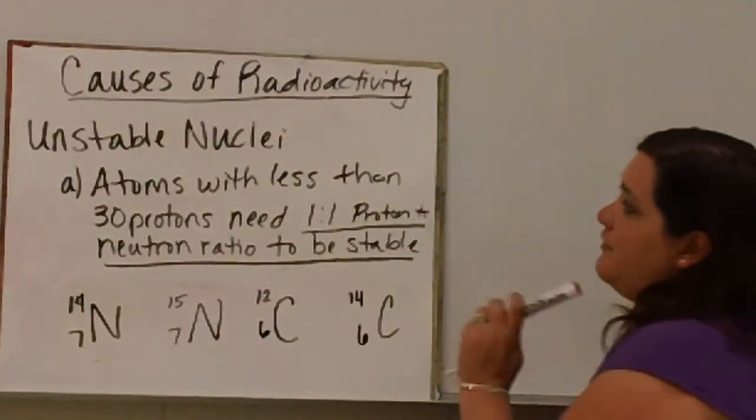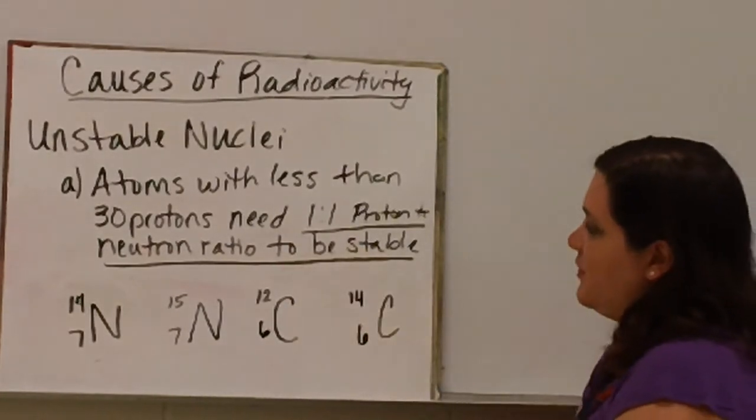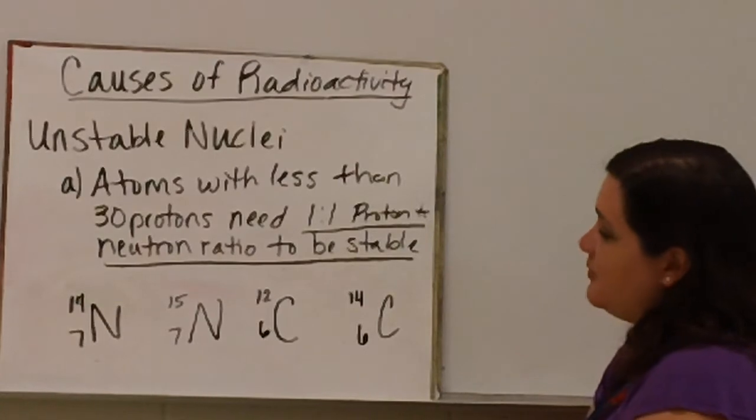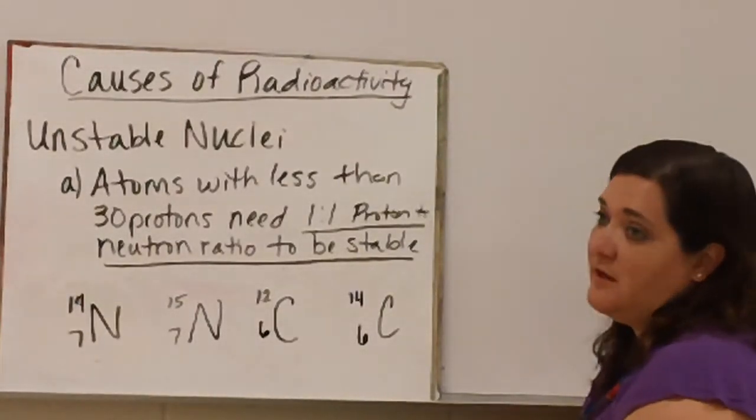The main cause of radioactivity is unstable nuclei. Atoms with less than 30 protons have to have a one-to-one proton-neutron ratio in order to be stable. Anything other than a one-to-one proton-neutron ratio, then it is unstable.